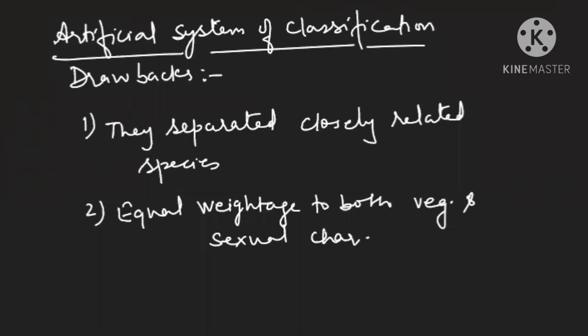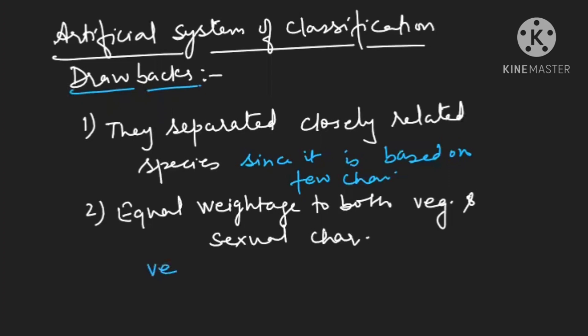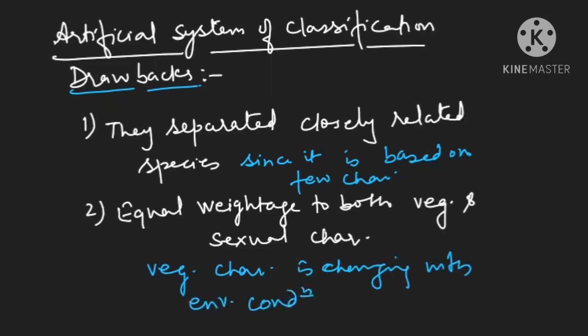A very important drawback of the artificial system is that it separated closely related species, because it was based on only few characters. Also, it gave importance to both vegetative and sexual characters, but vegetative characters are affected by and change with environmental conditions. So it is better to give importance to sexual characters instead of vegetative characters. That is why this system of classification is not accepted.